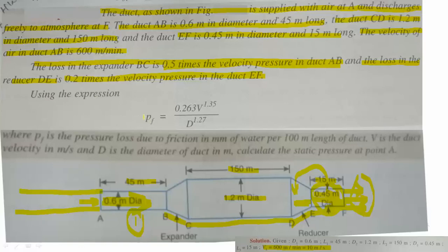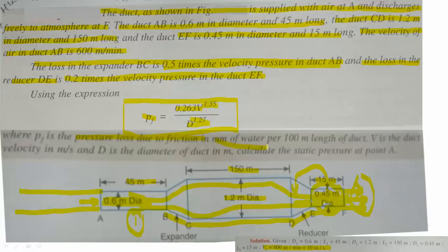Using the expression: pressure loss PF equals 0.263 × V^1.35 divided by D^1.27, we calculate frictional loss in the long pipe. Here PF is the pressure loss due to friction in millimeters of water per 100 meters length of duct.